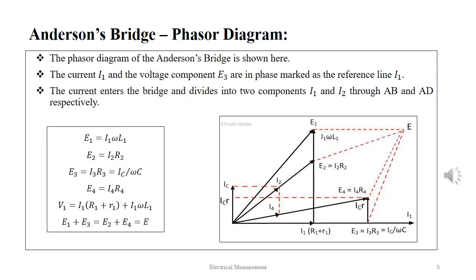Here we see the phasor diagram of the Anderson's bridge. The current I1 and the voltage E3 are in phase represented on the horizontal line. The current enters the bridge and divides into two components I1 and I2 through the arm AB and AD respectively.